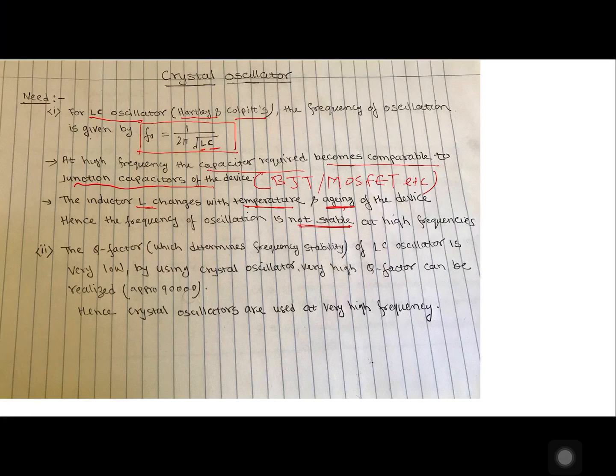Second drawback of LC oscillator is low Q factor. Q factor is low for those circuits and since Q factor is low which determines the frequency stability, you can say it has low stability also. Whereas crystal has very high Q factor which gives you very high stable oscillations at very high frequencies.